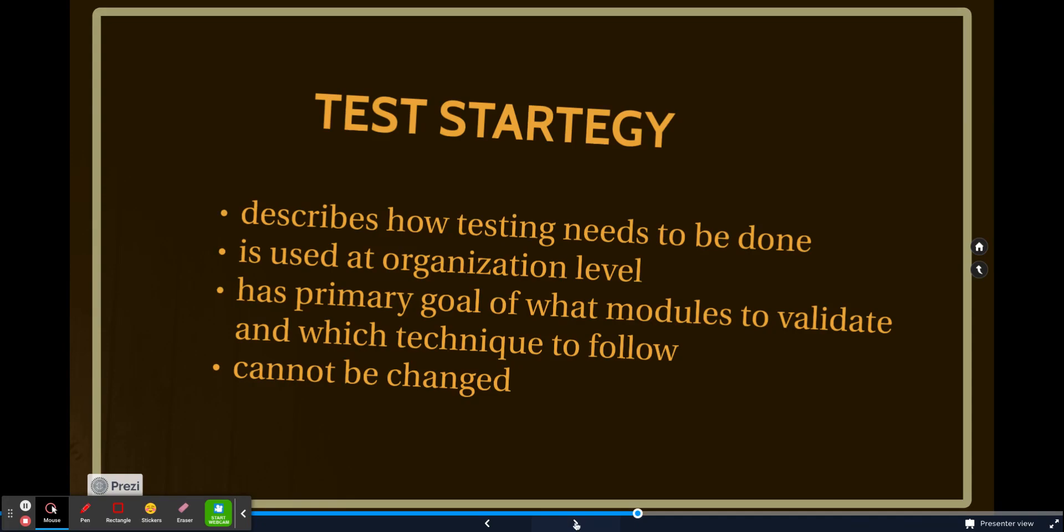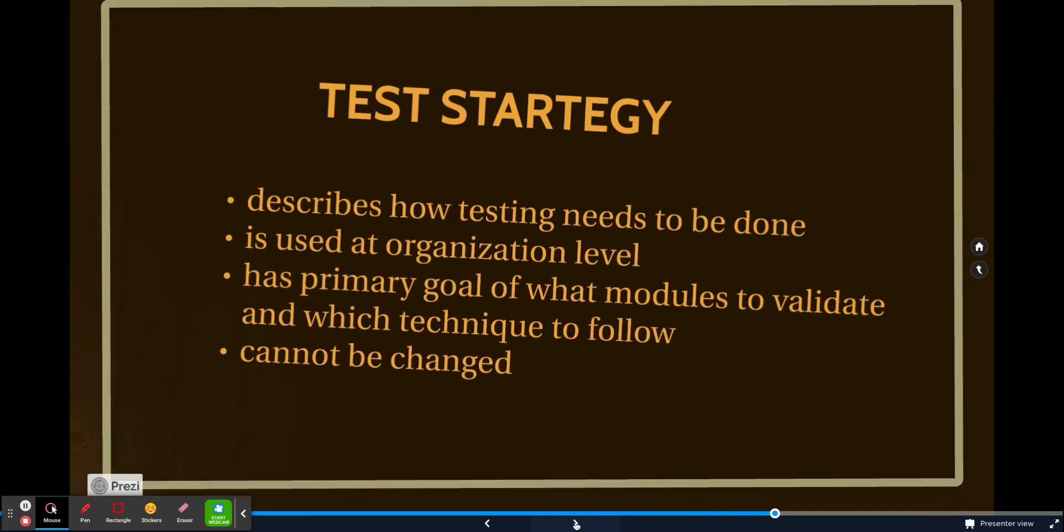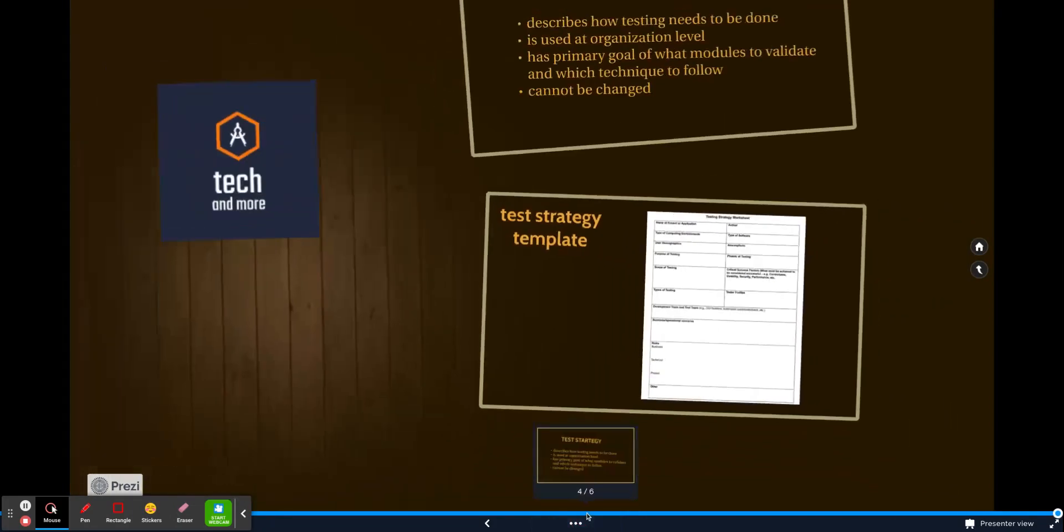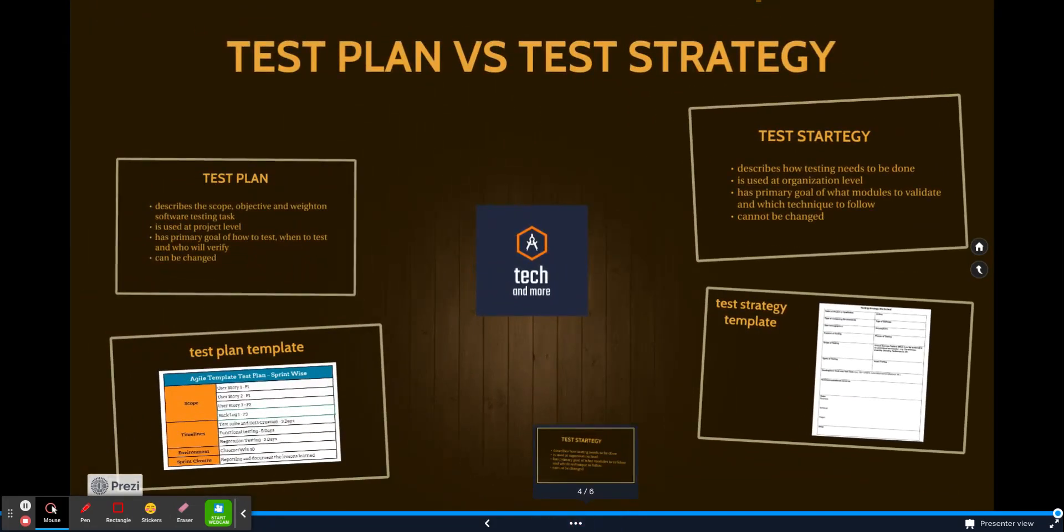So take a screenshot or pause your video here and have a look at the test plan and test strategy, compare the pointers, correlate them, and I think you'll be able to understand. And what I would suggest is that if someone asks you in an interview what is the difference between test plan and test strategy, you simply say a test plan is actually a document that discusses the QA parameters at the project level, that is only talking about the project pointers, that is what will be the user stories, what will be the timelines, what will be the environment that we'll be using, when will the testing close, when will the testing start. This is test plan.